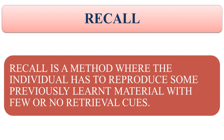In the primacy effect, the initial items of the list are easily remembered due to their transfer to long-term memory. In the recency effect, the final items of the list can be recalled better as they are still in short-term memory. An example of free recall is when we listen to a lecture and afterwards recall a few important points, irrespective of the order in which they were presented.